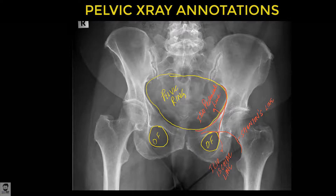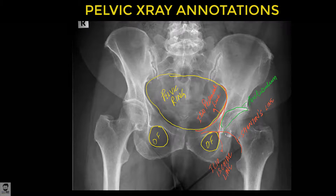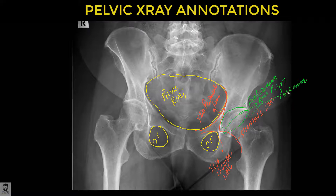Now we identify the acetabulum. You also need to identify the anterior and posterior rims of the acetabulum — that's the anterior rim and that's the posterior rim, so that's the anterior rim of the acetabulum.